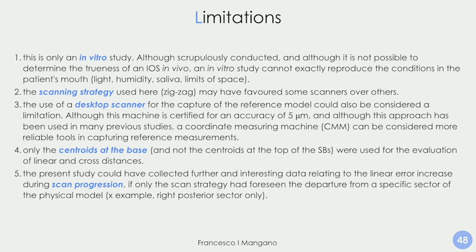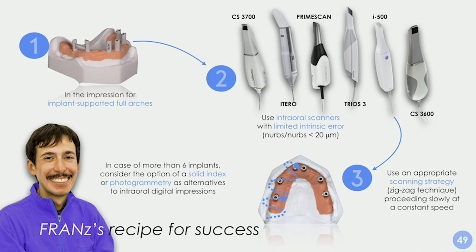The recipe for success when scanning full arches is to choose proper devices — devices with an intrinsic accuracy in NURBS of less than 20 microns. The scanning strategy and operator skill are very important. We suggest using intraoral digital impression with intraoral scanners when there are up to four implants. If there are six or more implants, consider using a solid index technique or photogrammetry — we will discuss these techniques in more detail in the next lectures.